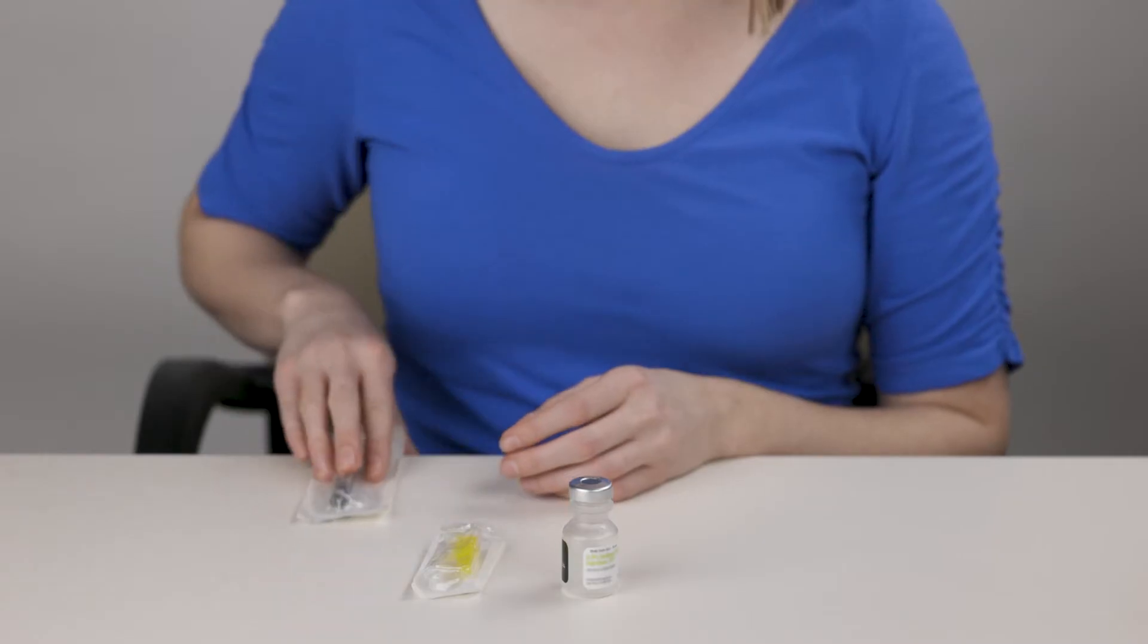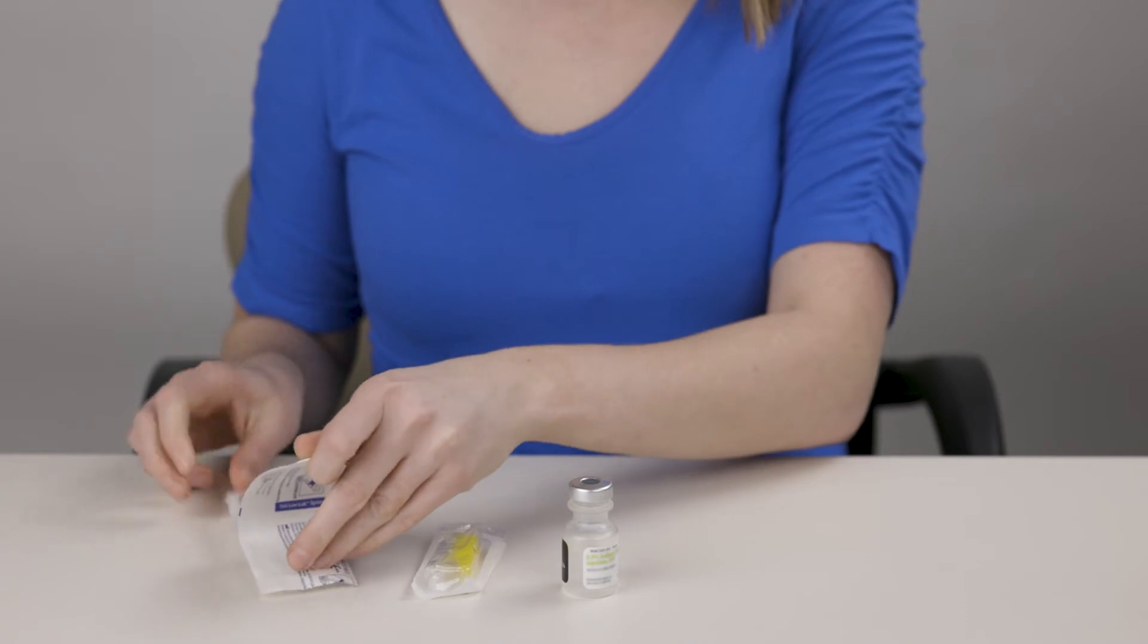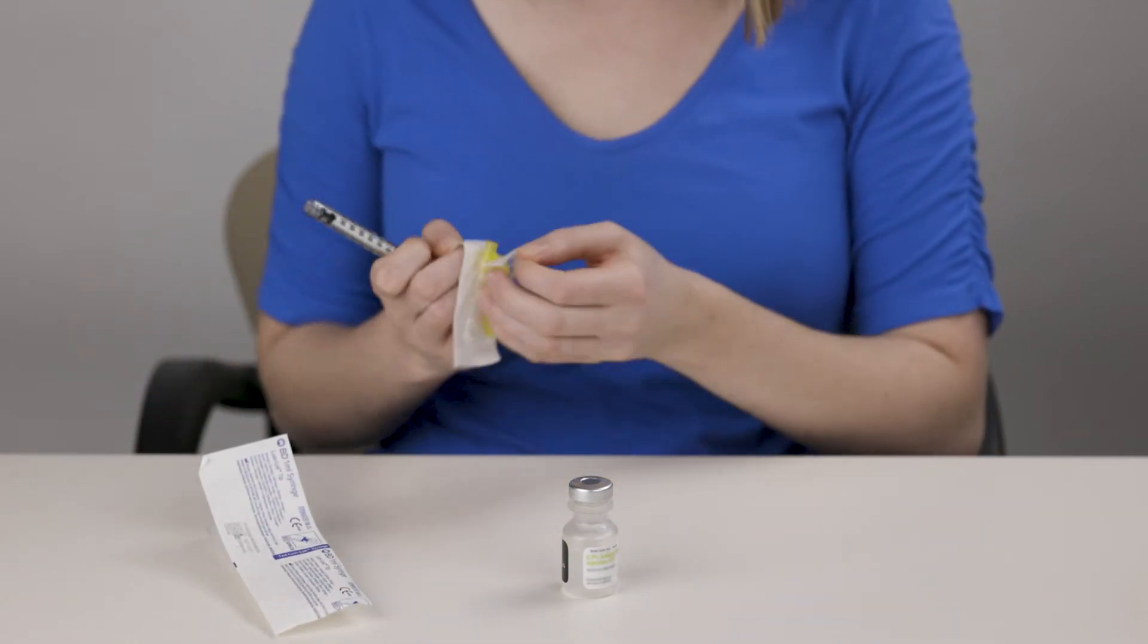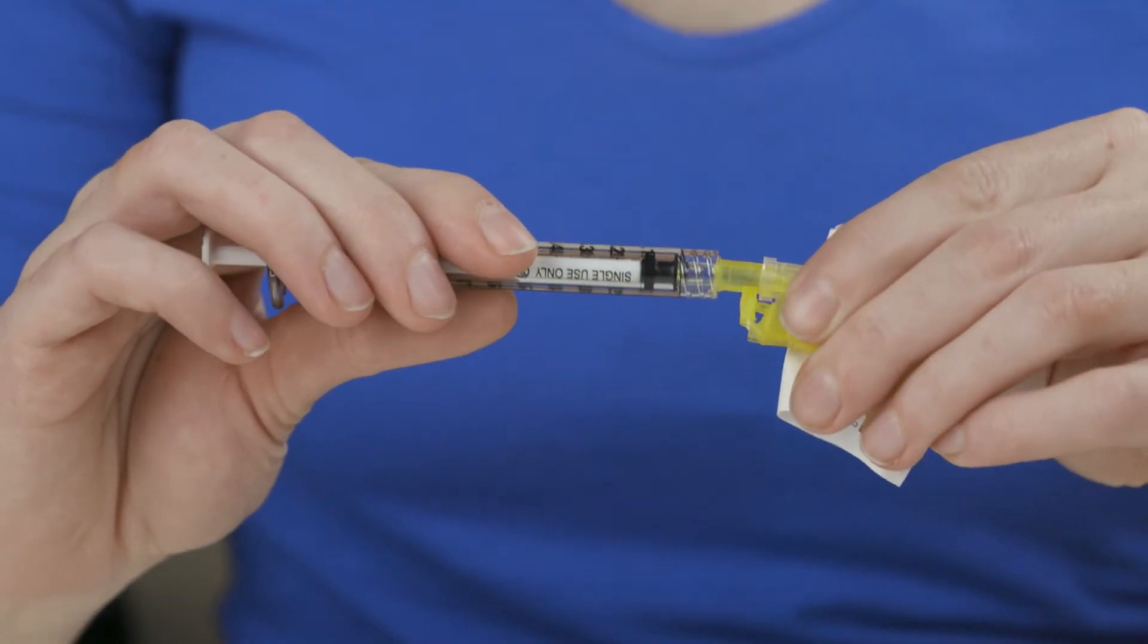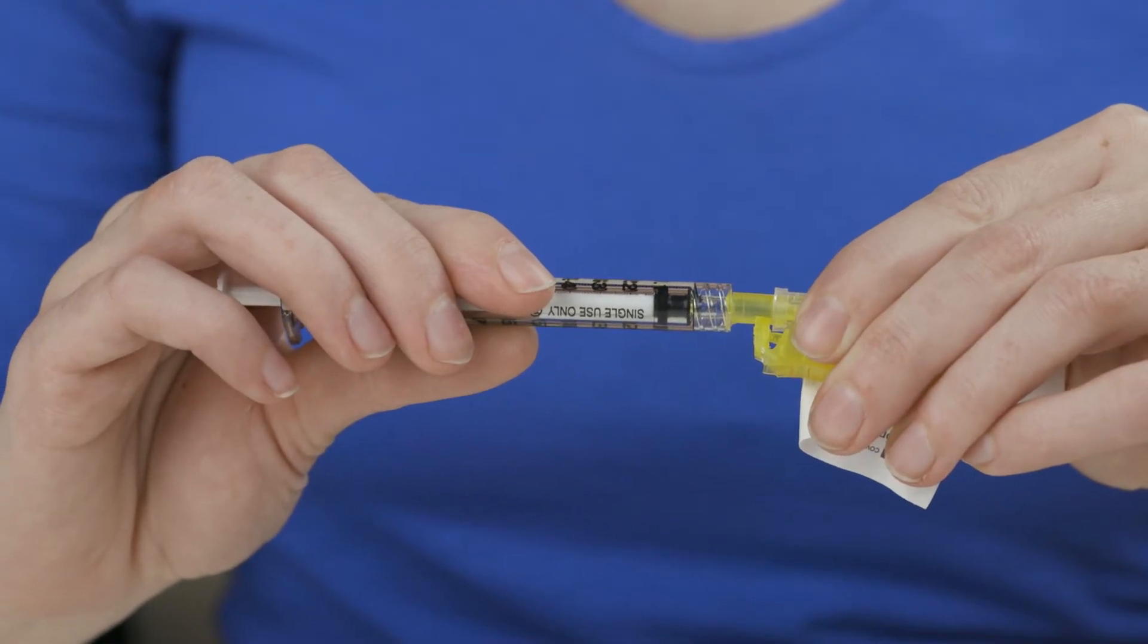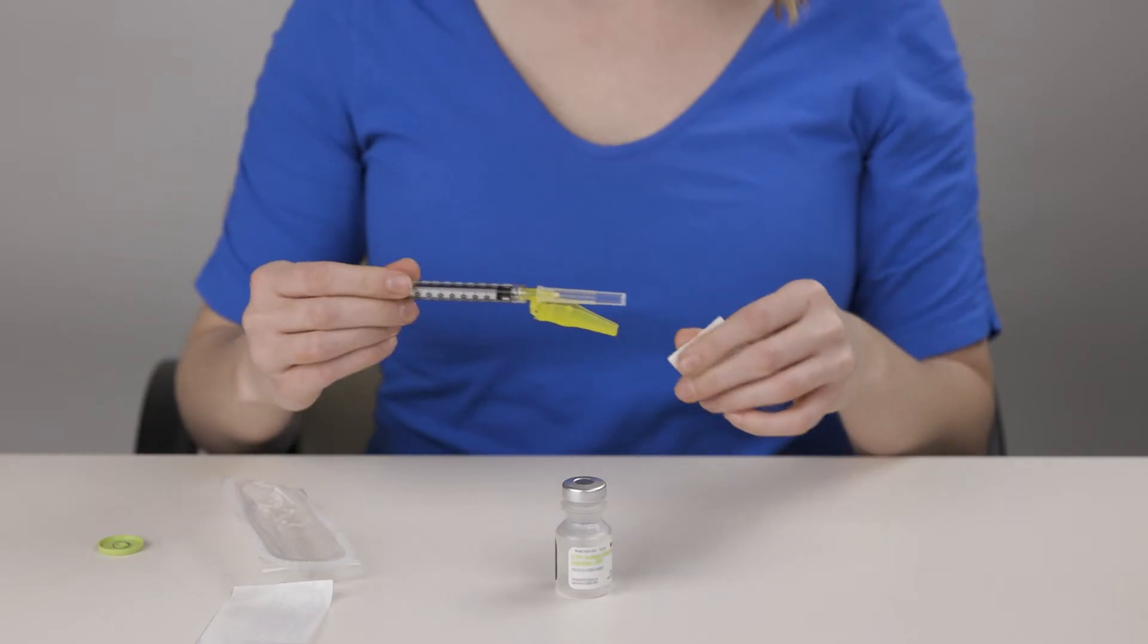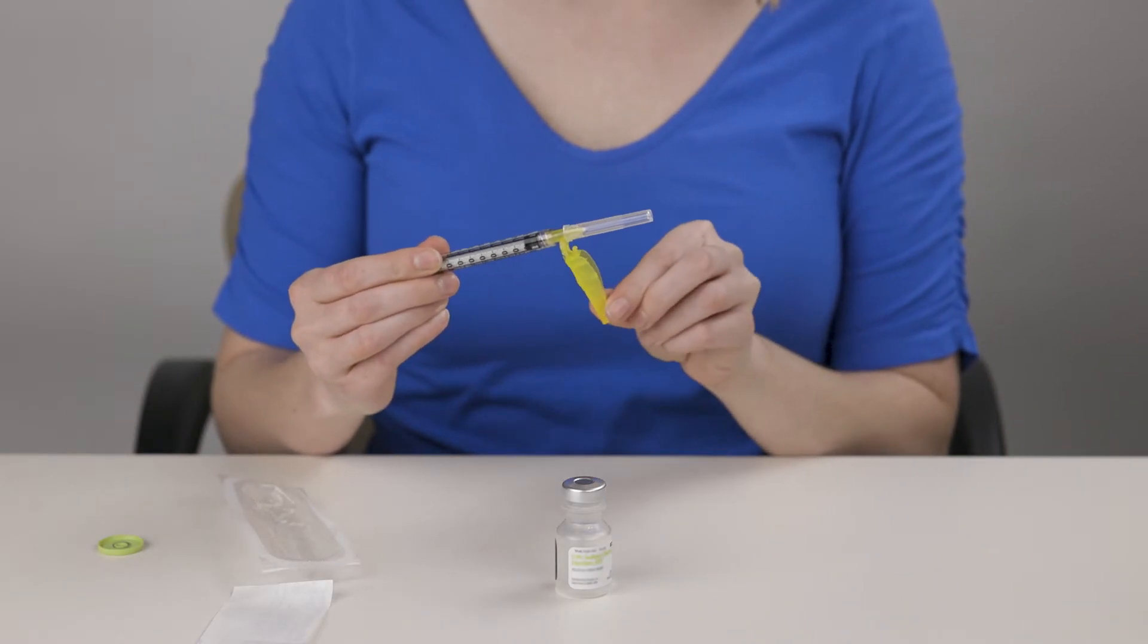Unwrap the needle and syringe. To join them together, insert the tip of the syringe into the bottom of the needle by pushing in and turning clockwise. Move the safety feature away from the needle.